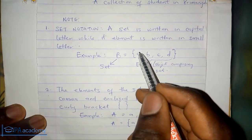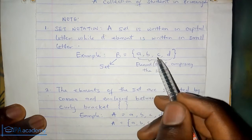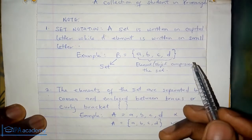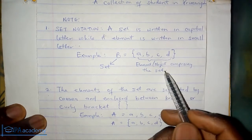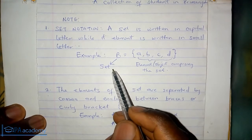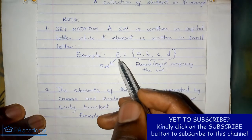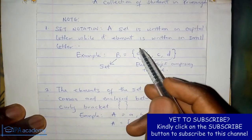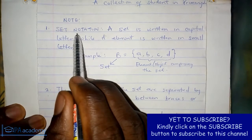What we have inside the curly brackets are the elements — A, B, C, D — written in small letters. These are the elements or objects comprising the set. While the B in capital letter is the set itself. So we call it set B, and the elements inside represent the members of that set. That's what we mean by set notation.